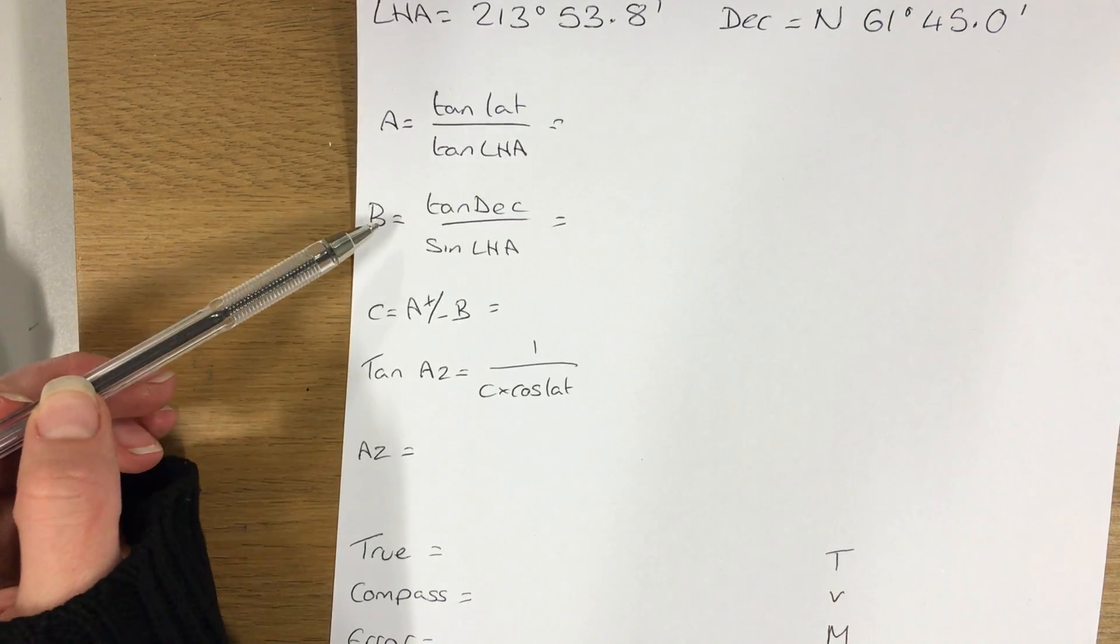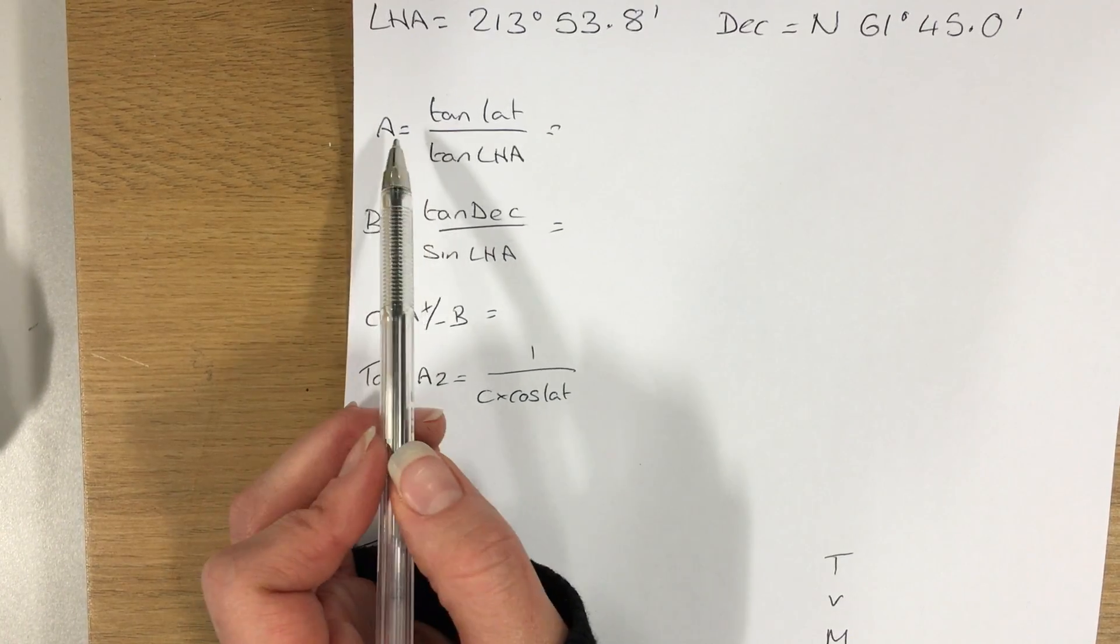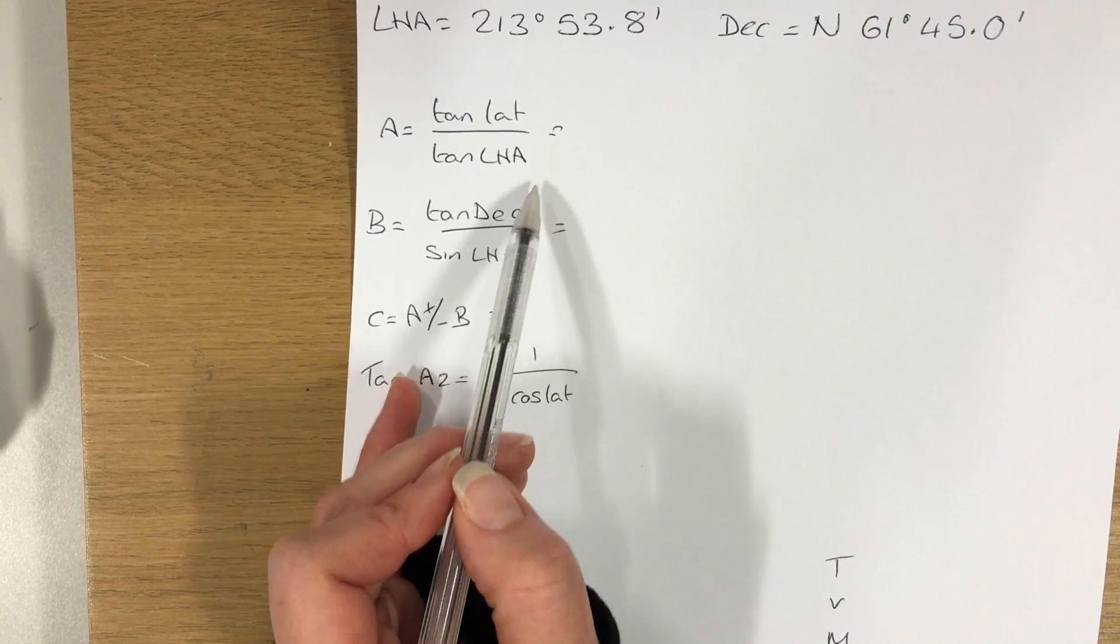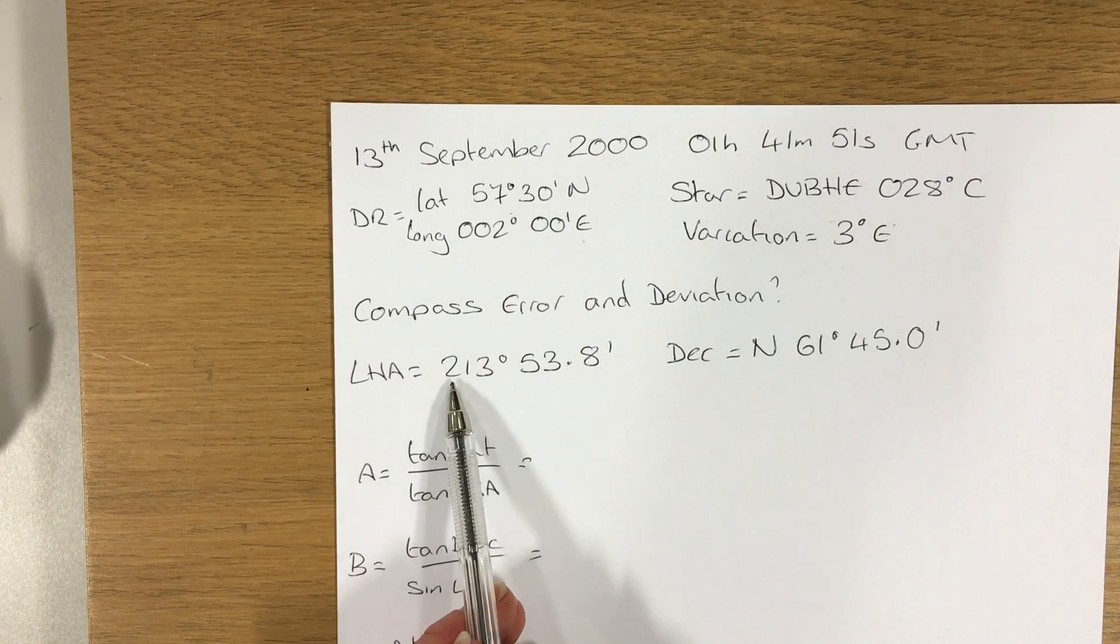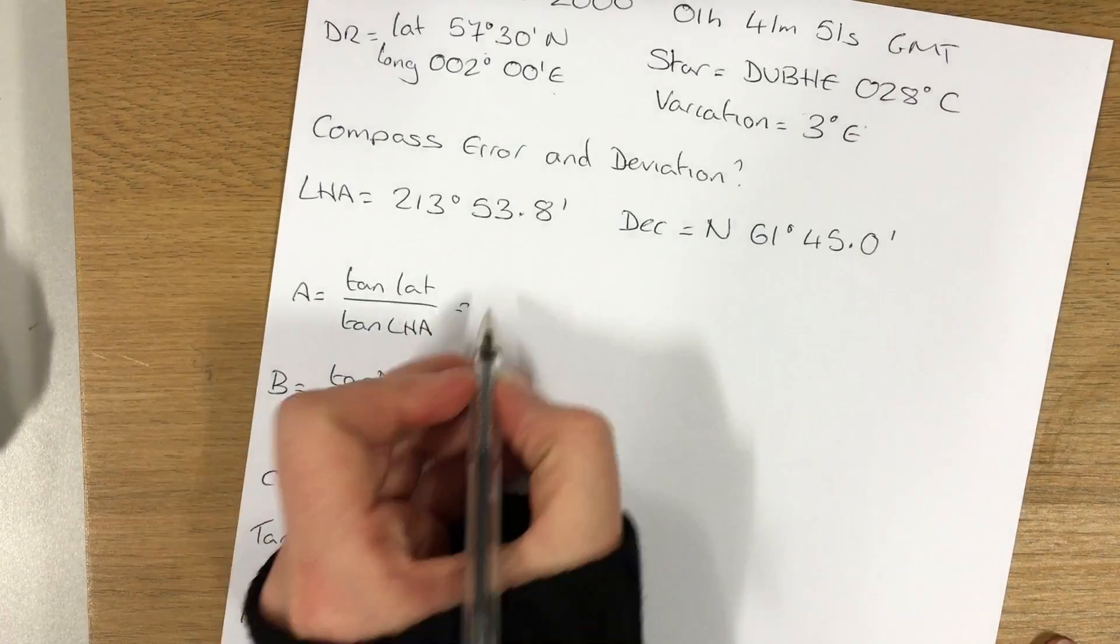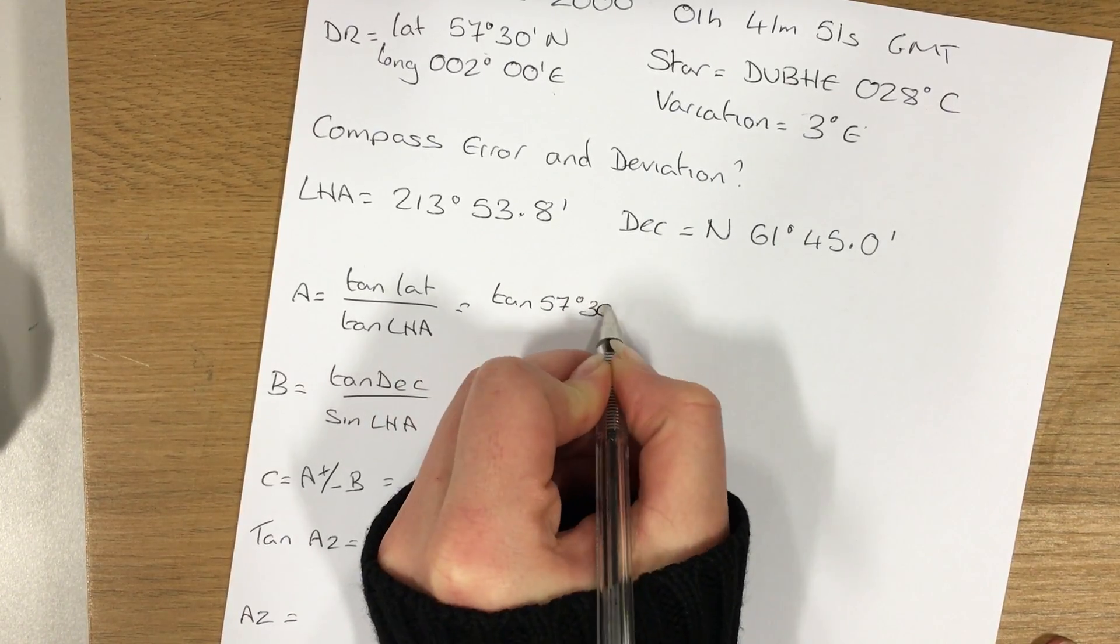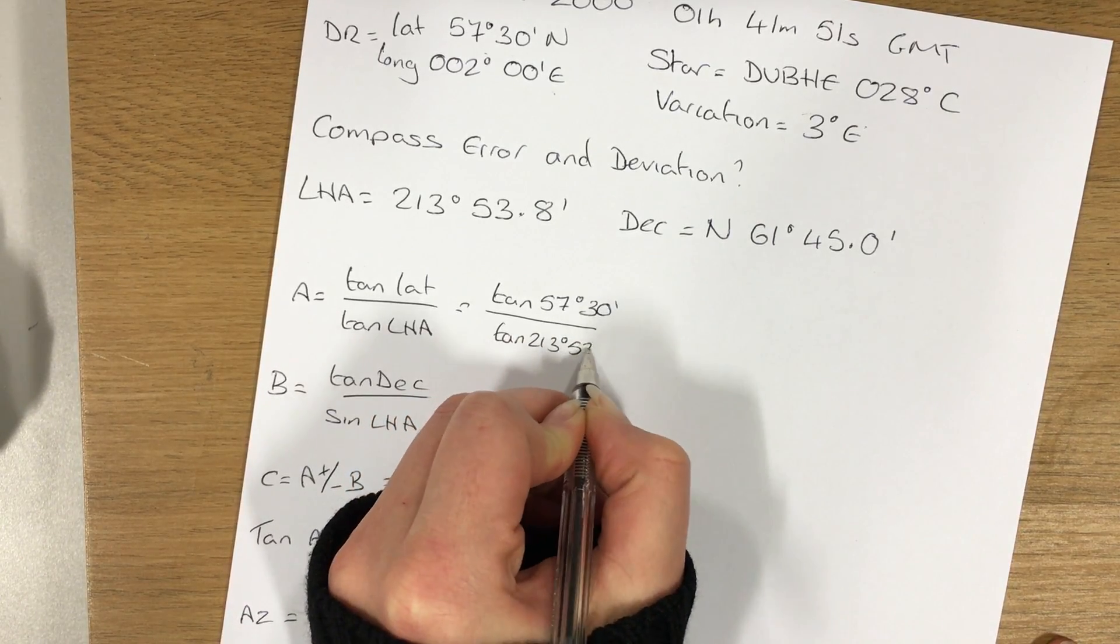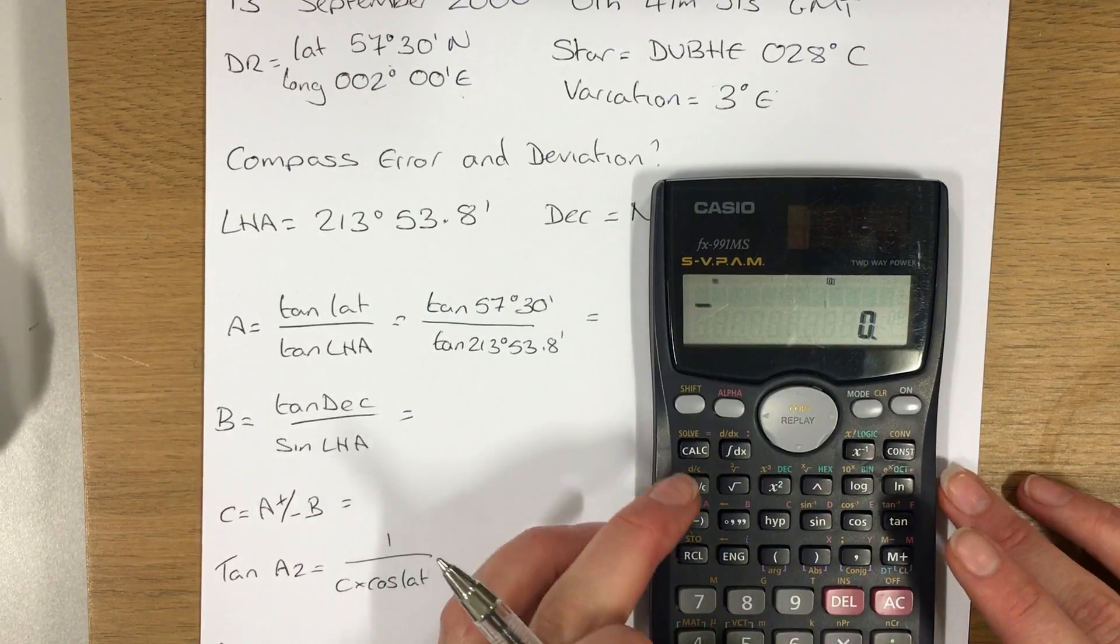In order to do an azimuth, I first need to find the values for A, B, and C, and these are my three formulas. So firstly, let's do A. A is equal to the tan of the latitude divided by the tan of the LHA. So the latitude was given as 57 degrees 30 minutes and the LHA I've calculated as 213 degrees 53.8.